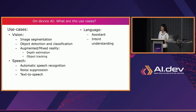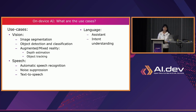For language models, the input is usually text. Common models include assistant intent understanding. The popular large language models we use often nowadays are also typical language models.